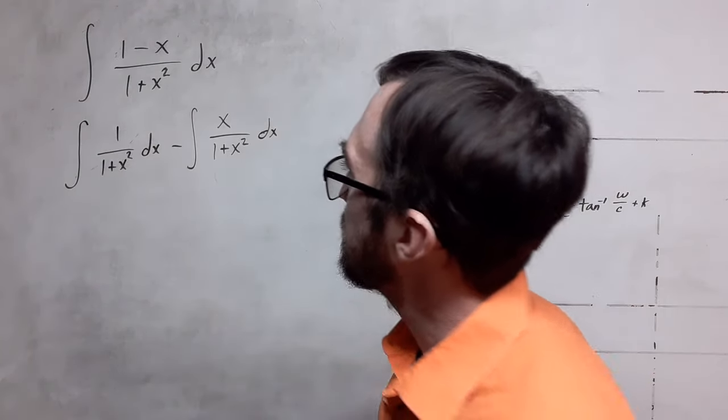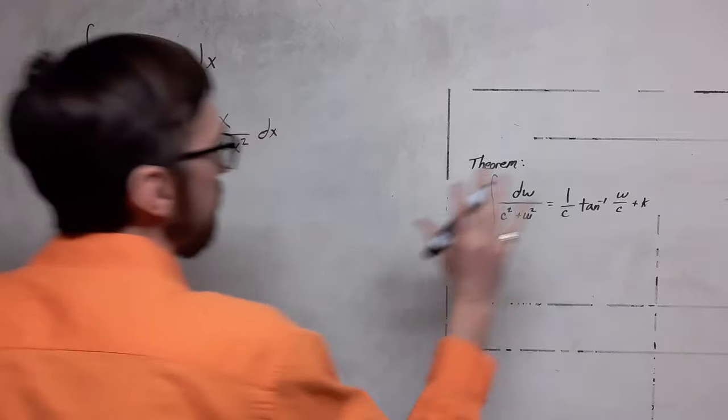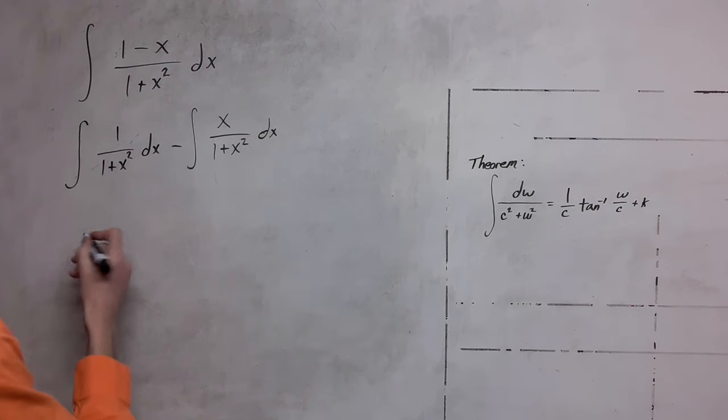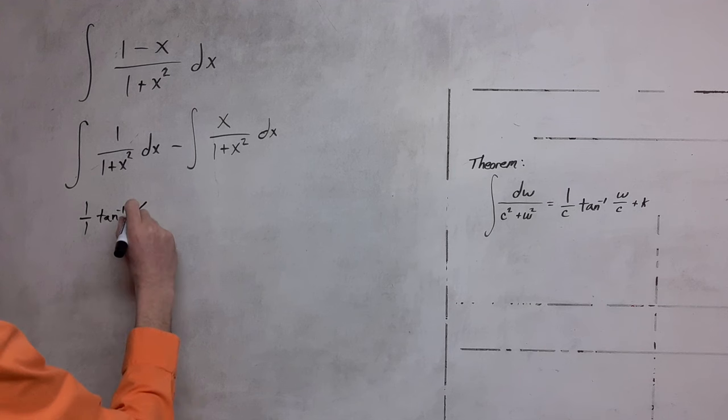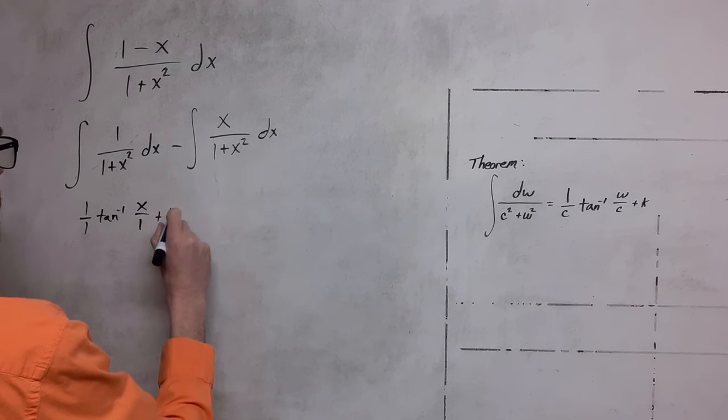So very quickly we can build the antiderivative for this based on the theorem. So we're going to have 1 over 1 arctan, and then the term of integration, which in this case is x, divided by 1 plus some constant.